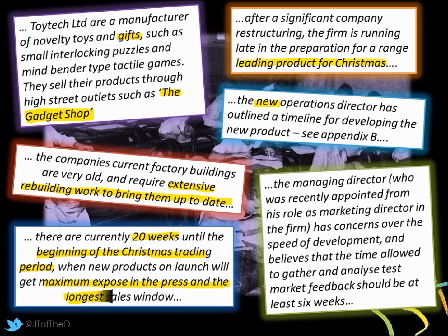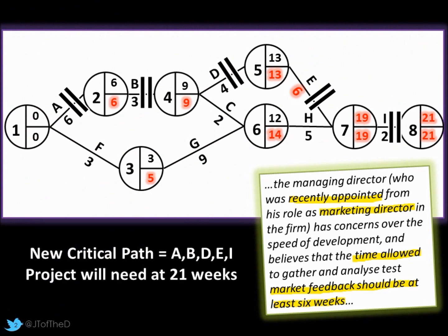We have 20 weeks until Christmas, and that 20 weeks is to get maximum exposure. If it's 21 or 22 weeks, that doesn't make quite so much of an impact - we won't completely miss sales, but we'll certainly miss that maximum period. Our managing director used to be our marketing director, so they're looking at this from a marketing perspective. They have concerns over the time allowed to gather test market data - they think it should actually be six weeks, rather than the original three. If we update the critical path and double task E to six weeks, it makes the marketing activities A, B, D, and E now critical, and changes the total project latest finish time to 21 weeks - outside of our 20-week target.